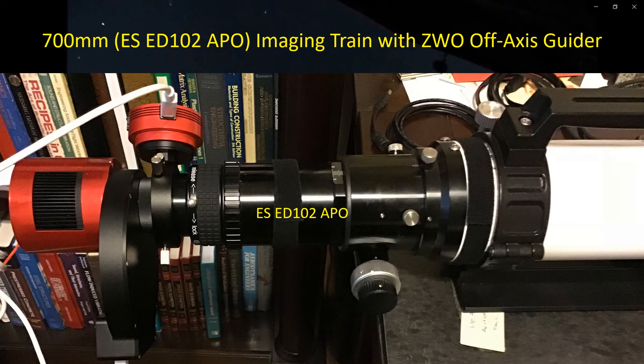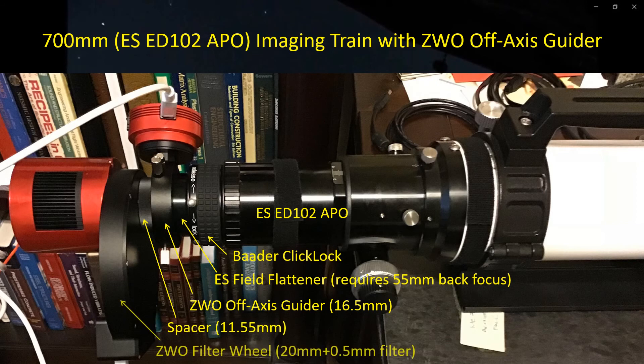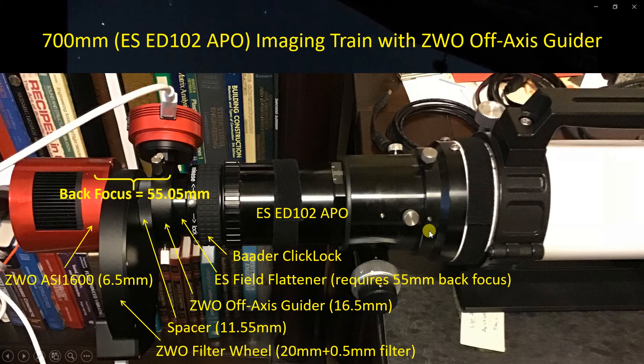My first use of the system was with this arrangement here attached to the 700 millimeter refractor which is the Explore Scientific ED102. I have the beta click lock that holds the system in place, the Explore Scientific field flattener which requires a 55 millimeter back focus which is important. I've got the off-axis guider at 16.5 millimeters, the spacer at 11.55 millimeters and the filter wheel at 20 millimeters plus perhaps 0.5 millimeters for the filter glass itself and then finally 6.5 millimeters in the guide camera and the imaging camera and all that adds up to about 55.05 millimeters so in theory everything should work out with this system.